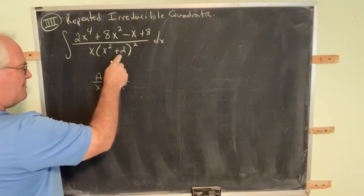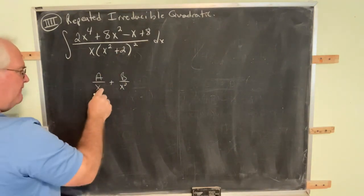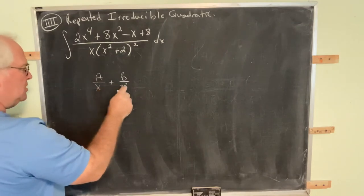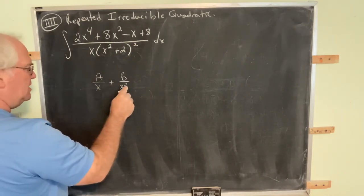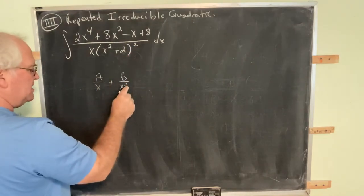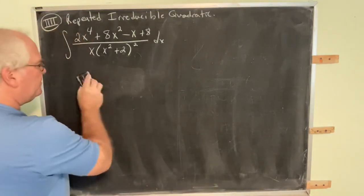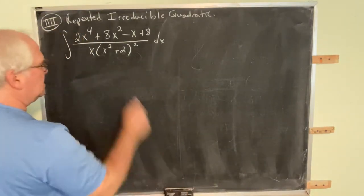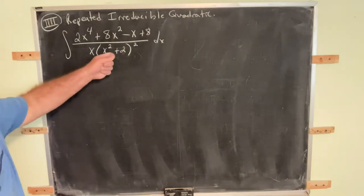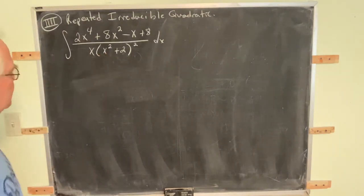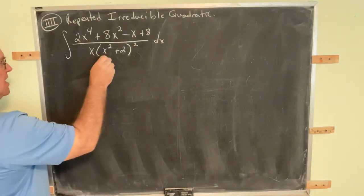A similar thing is going to happen here. Every exponent, natural number exponent, up to and including the exponent that's present, must be allowed for. But notice, if this is quadratic, we don't use A and B, we use Ax plus B. So let's go ahead and fill out the partial fraction decomposition of this.